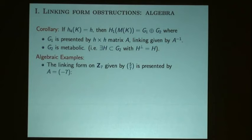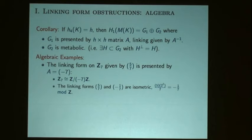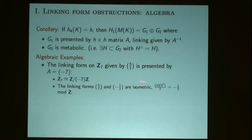The first example is the cyclic group of order seven. The linking form on the generator of Z7 has self-linking five-sevenths in Q mod Z. The observation is that this is presented by a one-by-one matrix, even though the linking form has a five in the numerator. Z7 is the quotient of Z by minus seven. If you take two in Z7, the self-linking of two is five times two squared, which is minus one-seventh mod Z. And you see that minus one-seventh is the inverse of this matrix.